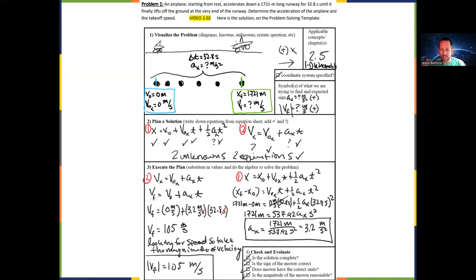And then a final speed, a takeoff speed of 105 meters per second. Remember, we can double that to get it to miles per hour. So that's around 200 miles per hour. That's a reasonable speed for an airplane to be going when it takes off.